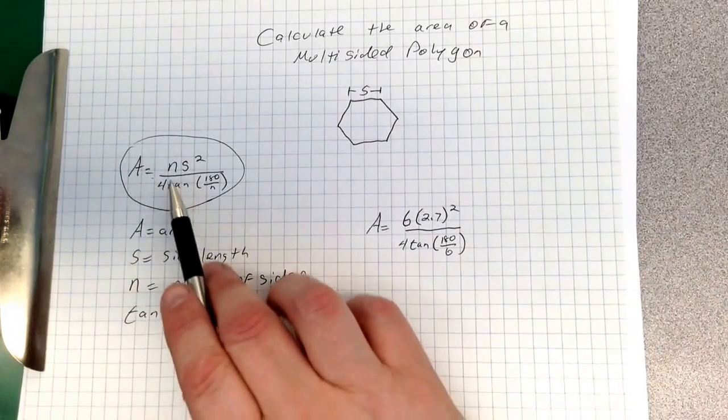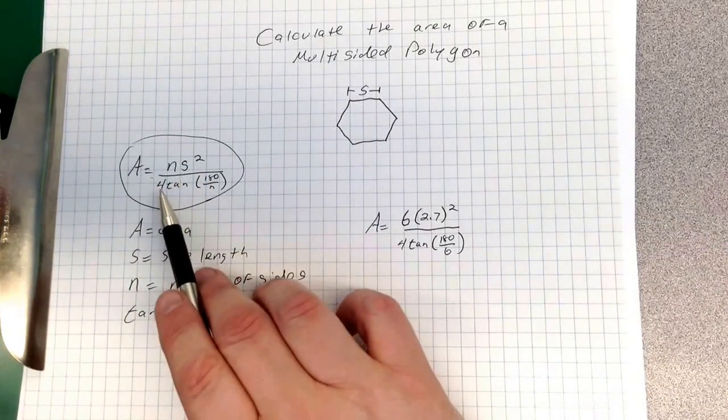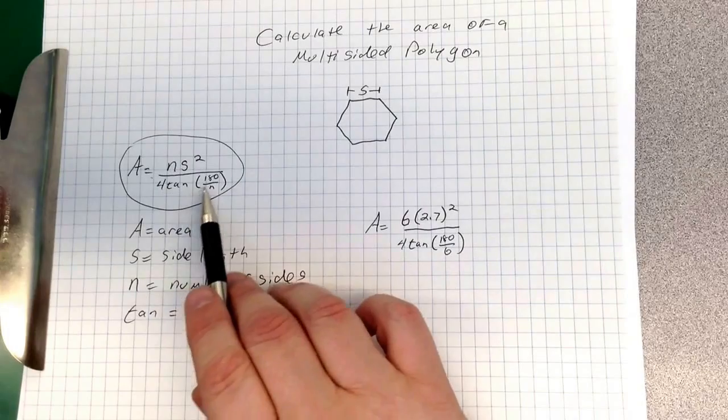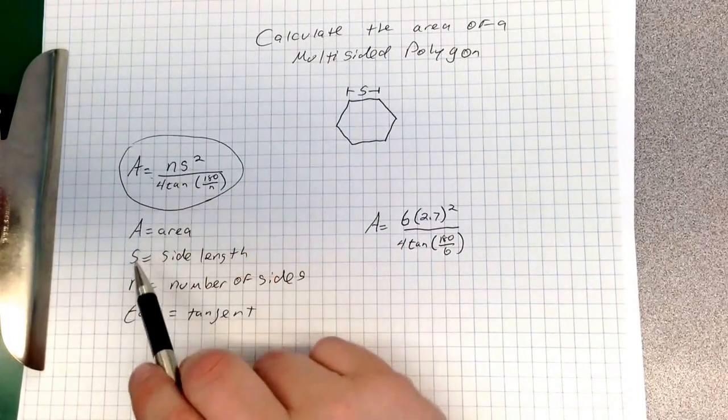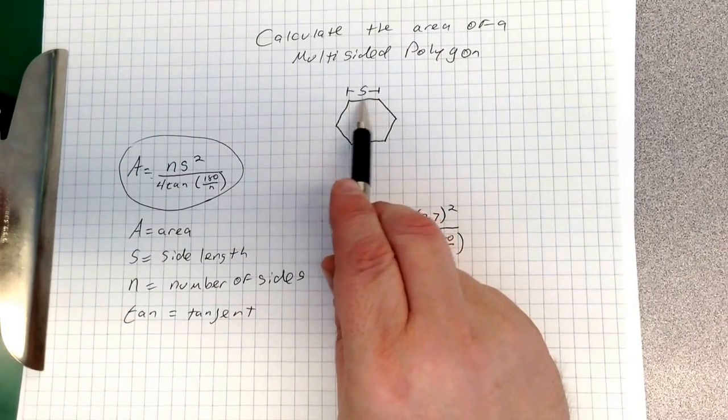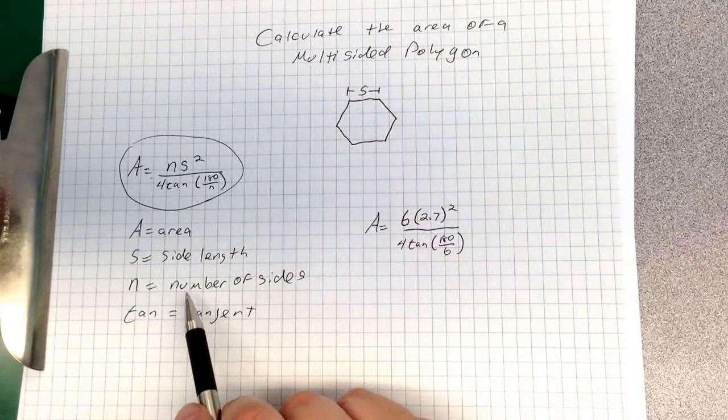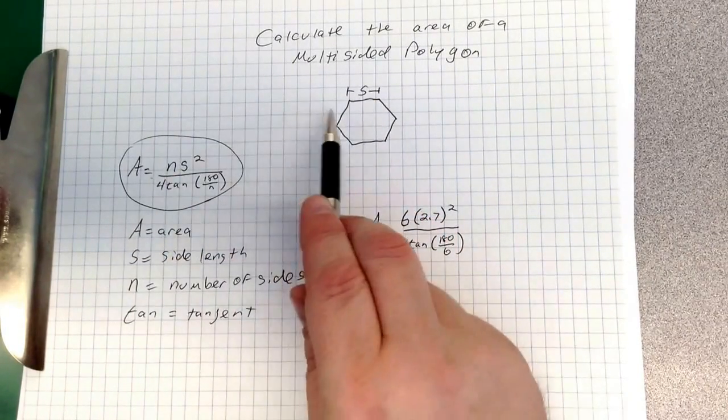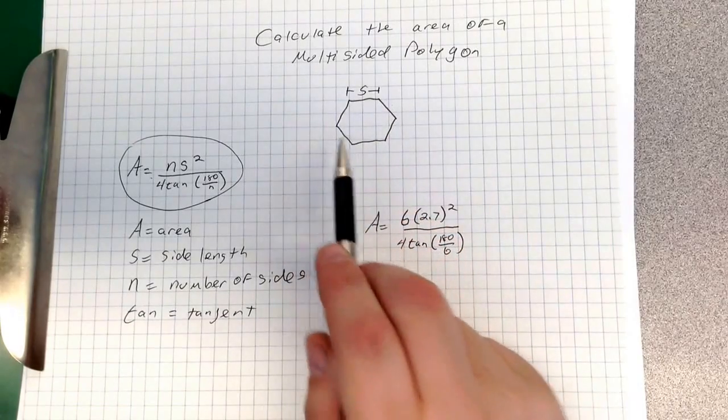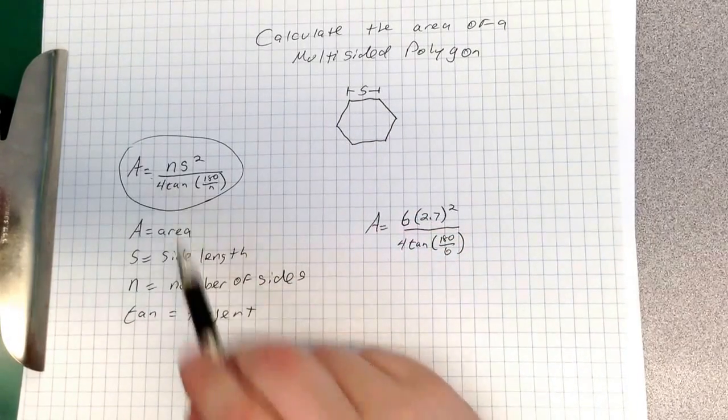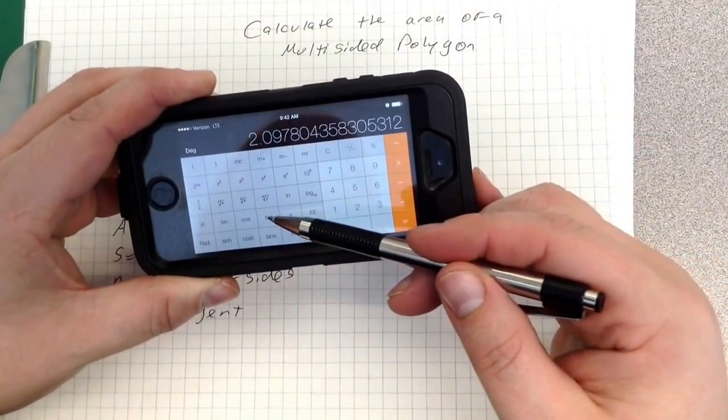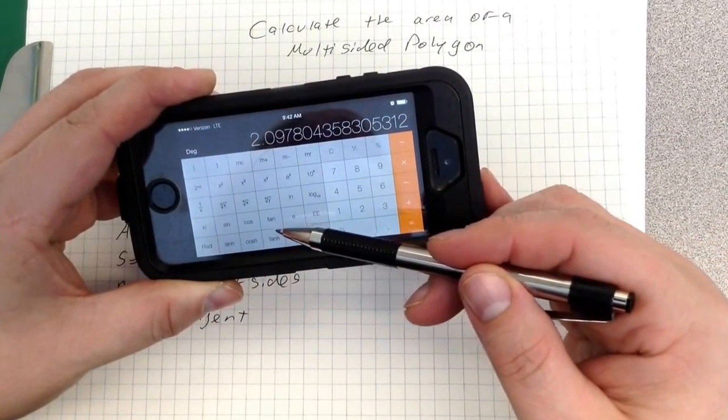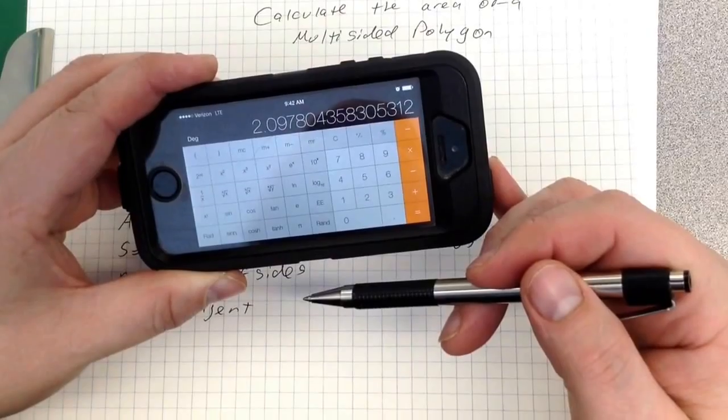It is area equals ns squared divided by 4 tan times 180 over n. Let's break this down. A is area. S is side length, and that is the length of one of your sides. n is your number of sides, which is 1, 2, 3, 4, 5, 6. And tangent is the key on the calculator. There is tangent. It's a geometric number that you'll learn more about later on.